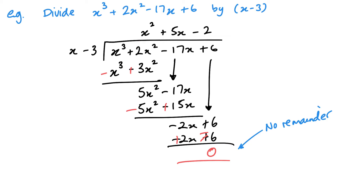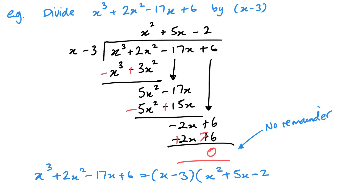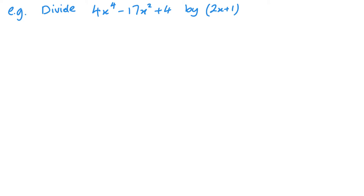It's also worth noting — I'll write this in blue — that this also means the cubic is the same as x minus 3 multiplied by x squared plus 5x minus 2. This is a way of factorizing the cubic. If I get to this point, I might be able to factorize the quadratic further and end up with three brackets. So this long division is very useful for factorizing.